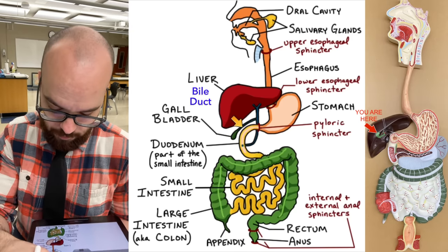There's another branch off the bile duct connecting to our pancreas. You might remember the pancreas is part of the endocrine system making hormones to regulate blood sugar, but it has a second important function: making digestive enzymes. Those enzymes get dumped into the duodenum just like bile does. Here's the pancreatic duct — it connects to the bile duct and then to the duodenum, so all those enzymes get deposited into the duodenum of the small intestine.